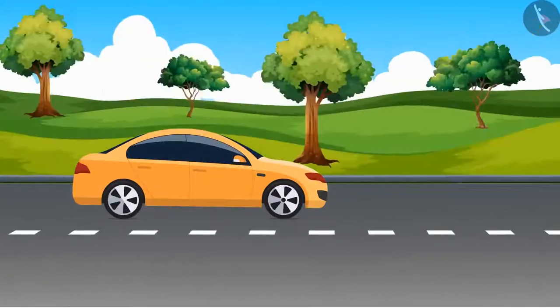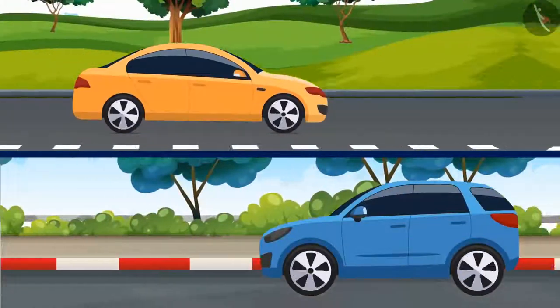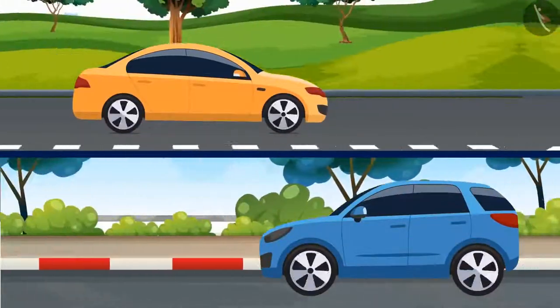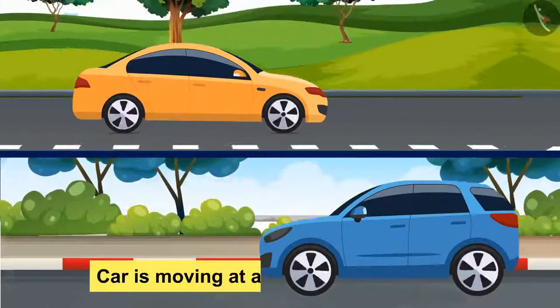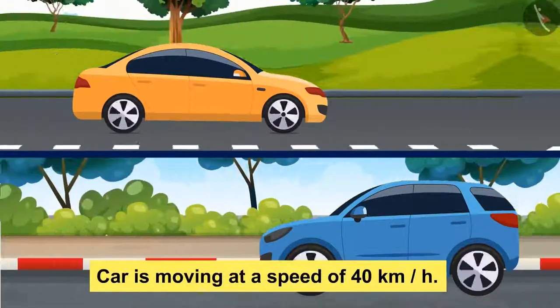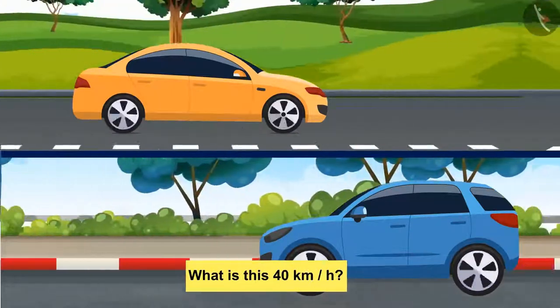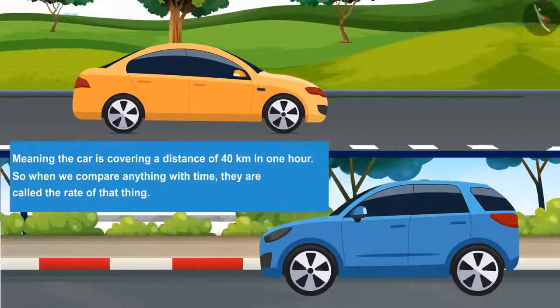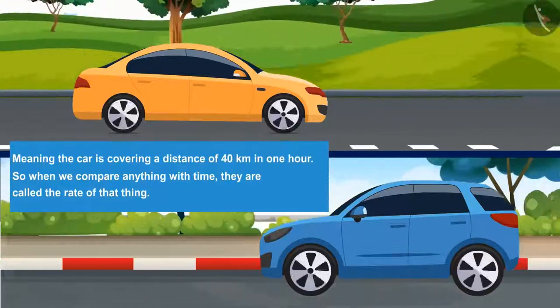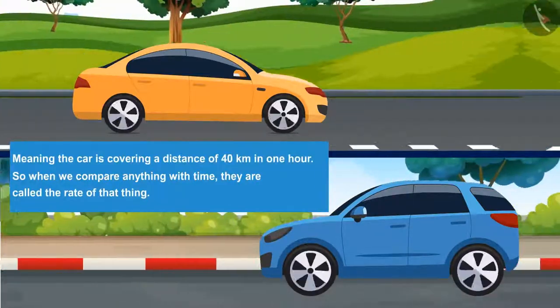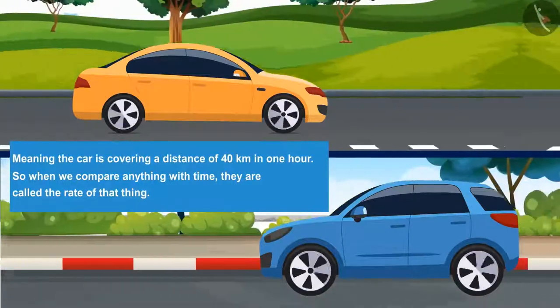You must have seen a moving car—some cars move fast and some slow. We also say that the car is moving at the speed of 40 kilometers per hour. But what is this 40 kilometers per hour? It means the car is covering a distance of 40 kilometers in one hour. So when we compare anything with time, they are called the rate of that thing, like the speed of the car.